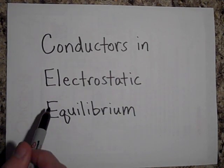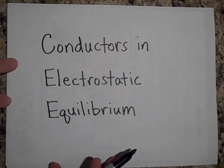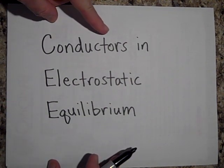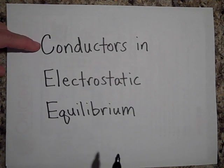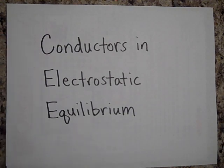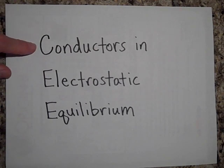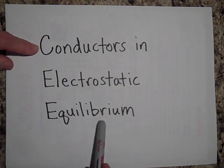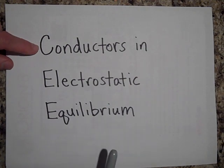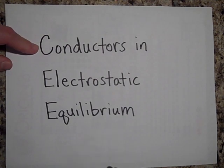I want to tell you about conductors that are in electrostatic equilibrium. A conductor is any material that will allow electrons to flow through it very easily — materials where the valence electrons are free to roam around. Usually we're talking about metals. By electrostatic equilibrium, we mean that if they're charged, the charge is done moving and is stationary.